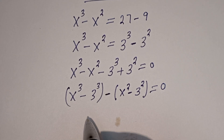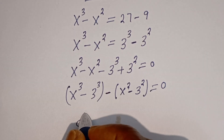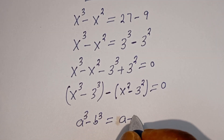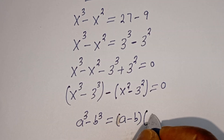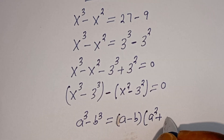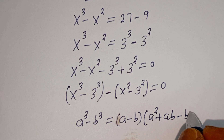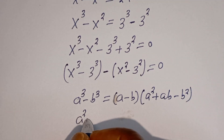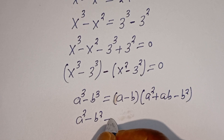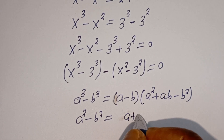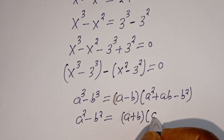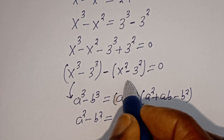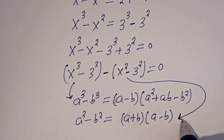Now take note of these algebraic rules: A to the power of 3 minus B to the power of 3 equals A minus B, bracket A squared plus AB minus B squared. Also, A squared minus B squared equals A plus B, bracket A minus B. We will apply both of these rules here.